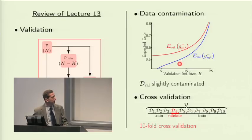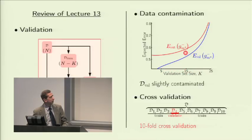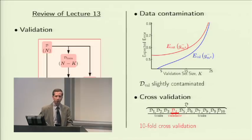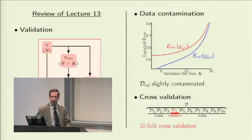We showed an experiment where, using very few examples to exaggerate the effect, we can see the impact: the blue curve is the validation error and the red curve is the out-of-sample error on the same hypothesis, just to pin down the bias. We realized that as we increase the number of examples, the bias goes down — the difference between the two curves decreases. If you have a reasonable size validation set, you can afford to estimate a couple of parameters without contaminating the data too much, and the measurement from the validation set is a reliable estimate.